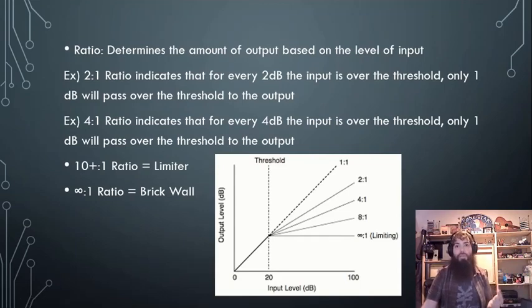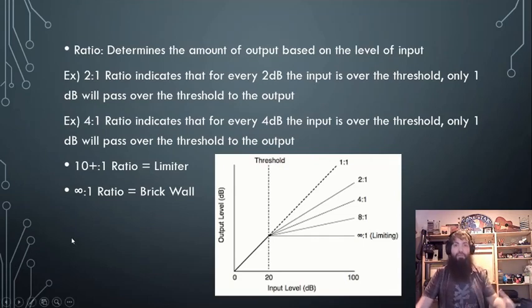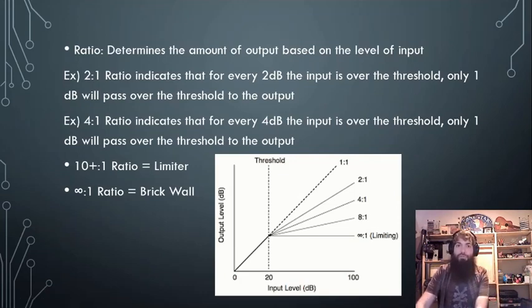A brick wall limiter has an infinity-to-one ratio, meaning it doesn't matter how loud the signal gets — if it hits that threshold, only one decibel is allowed over. Effectively, nothing gets through beyond that threshold.